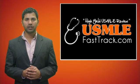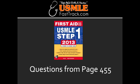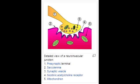Welcome to USMLEFastTrack.com. The section we're going to talk about today is from First Aid for the USMLE Step 1, 2013 edition, page 455. Neuromuscular blocking drugs are used for muscle paralysis in surgery or mechanical ventilation. Neuromuscular blocking drugs are selective for motor nicotinic receptors.